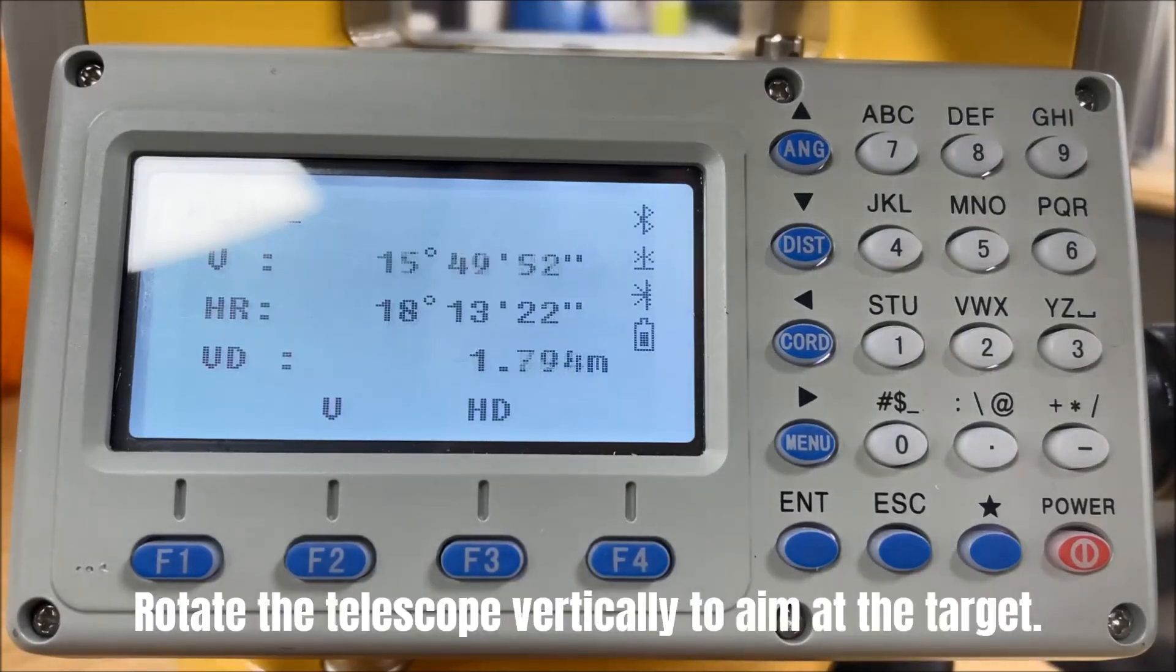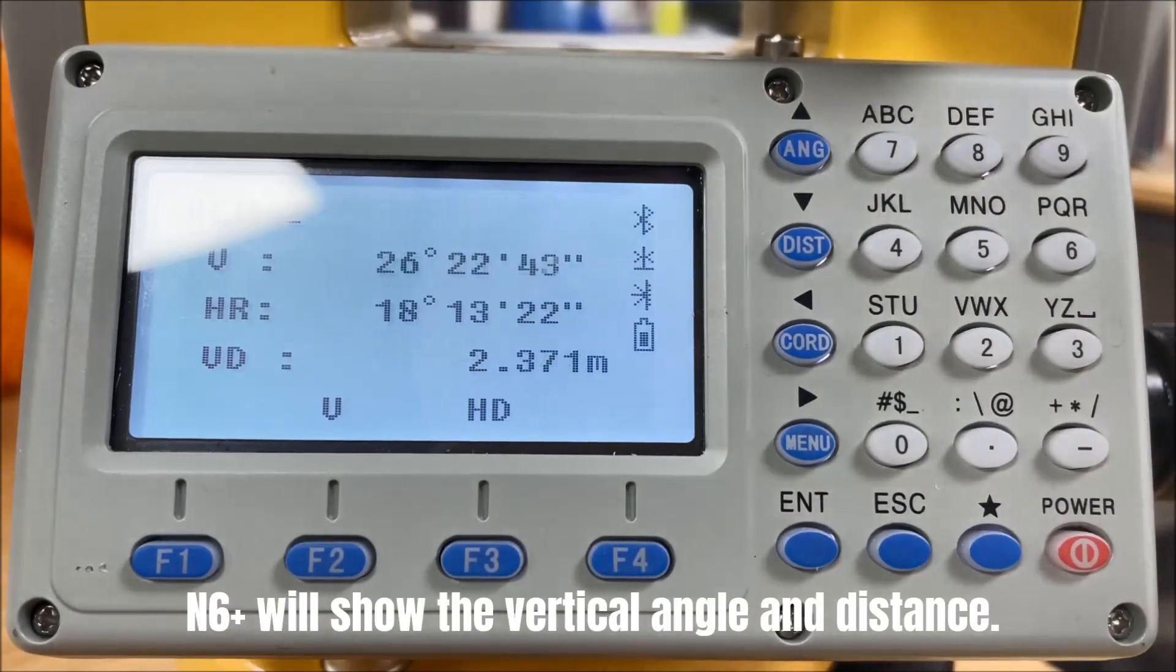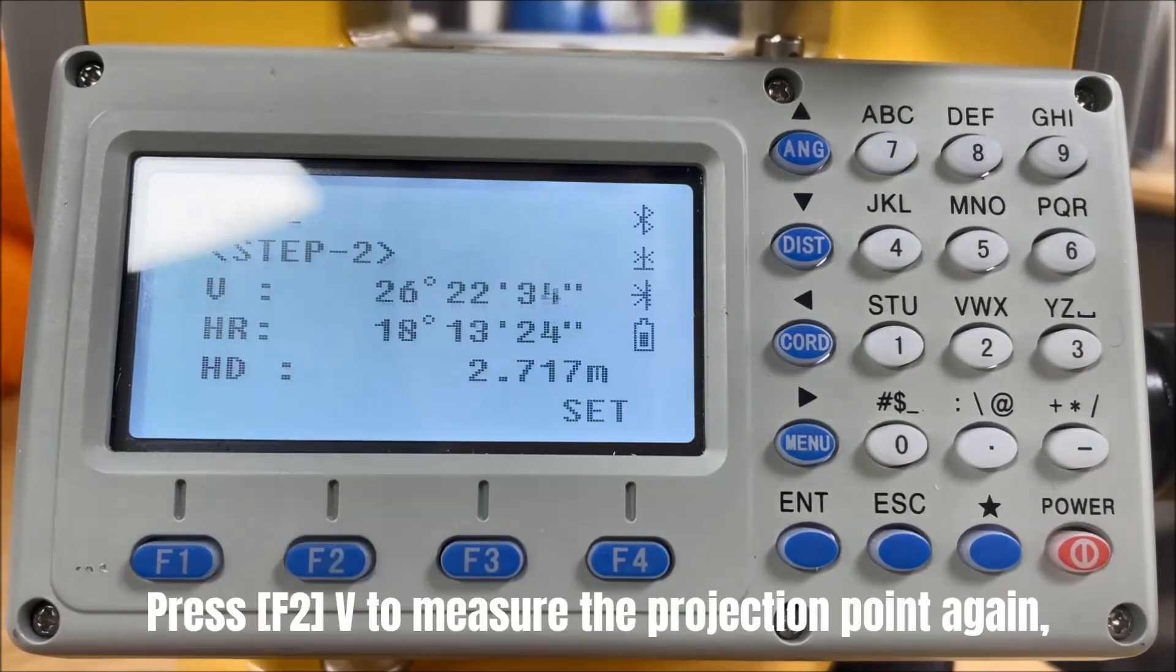Rotate the telescope vertically to aim at the target. N6 plus will show the vertical angle and distance. Press F2V to measure the projection point again.